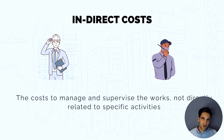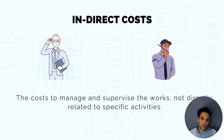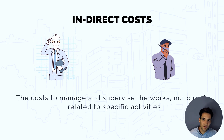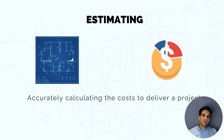On the other side, we have indirect costs — costs not directly specific to a single activity. These can be things like the cost to supervise and manage the works. A project manager overseeing many different tasks across different scopes is an indirect cost, not directly attributable to any specific activity. Now that we understand project costs, we need to understand what estimating is.